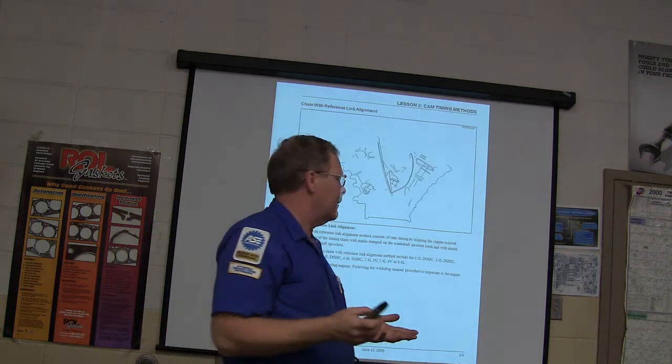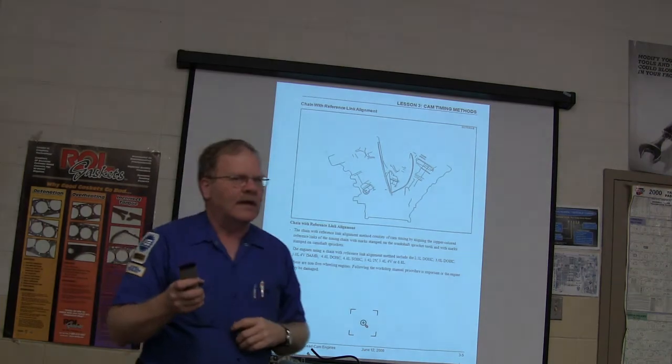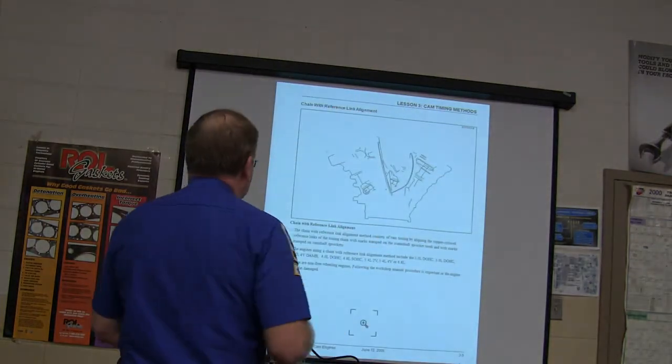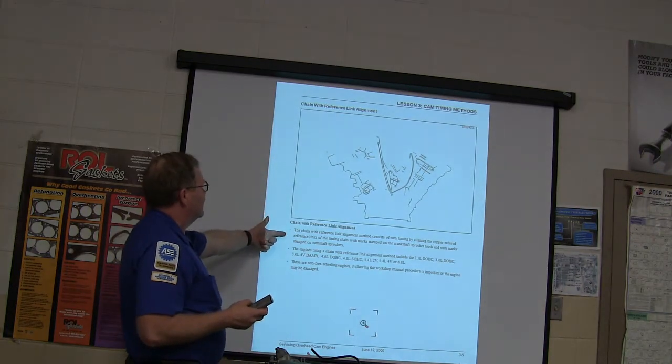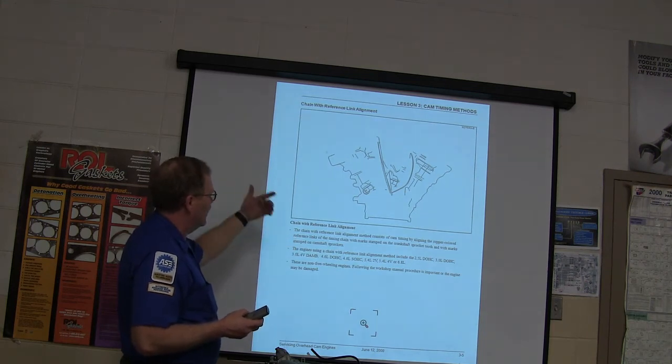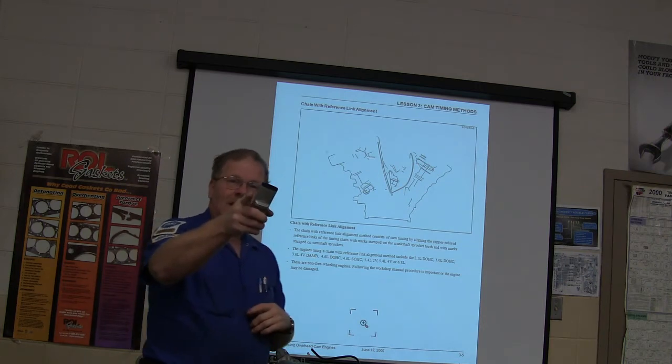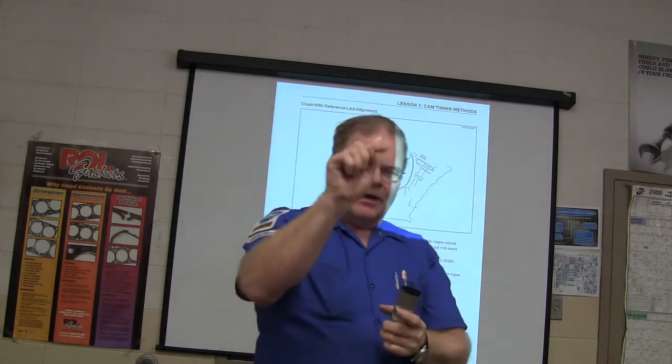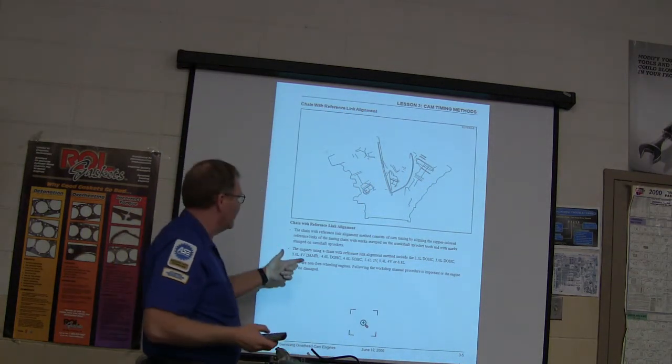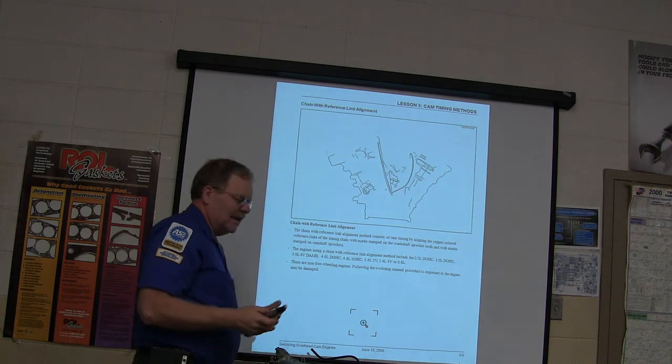The Ford 4-cylinders are typically all going to be freewheeling if they've got timing belts on them, except the 1.8-liter dual overhead cam that's in some of the older Escorts is not. But it's actually a Mazda design. The chain with reference link alignment consists of cam timing by the copper colored reference links on the timing chain with marks stamped on the camshaft sprocket. So you've got marks on the sprocket, you've got colored links on the chain. You actually had to count your links based on the picture and paint them with whiteout. This is what you had to do, which was the paint because you were using the old chains on that trainer engine.